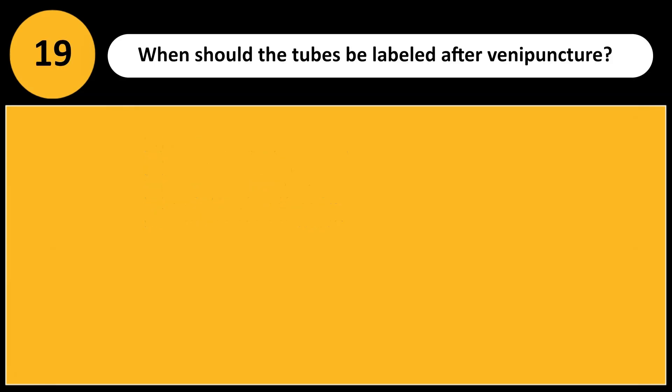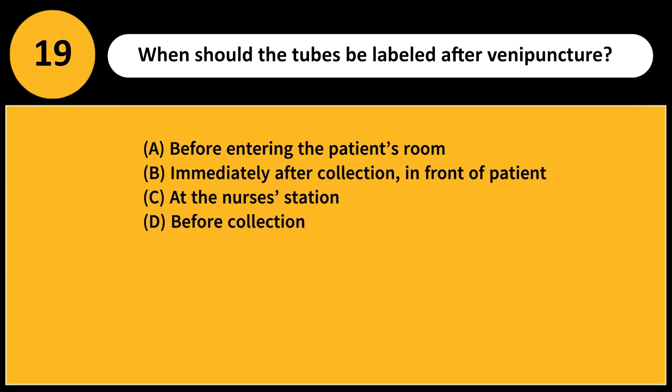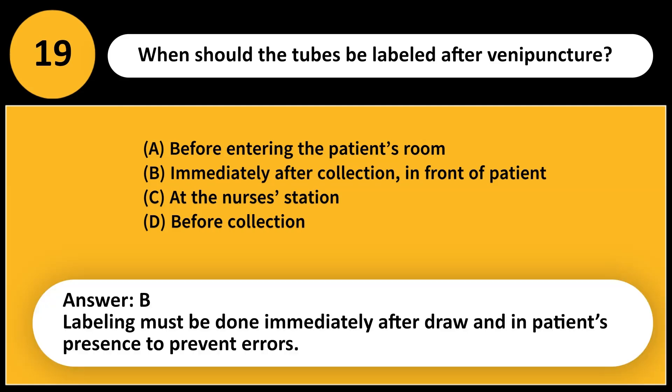When should the tubes be labeled after venipuncture? A. Before entering the patient's room. B. Immediately after collection, in front of patient. C. At the nurse's station. D. Before collection. Answer: B. Labeling must be done immediately after draw and in patient's presence to prevent errors.